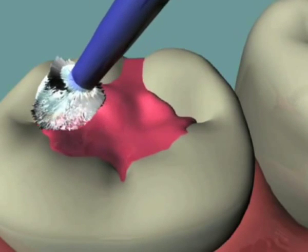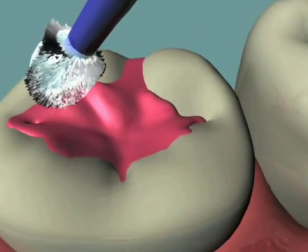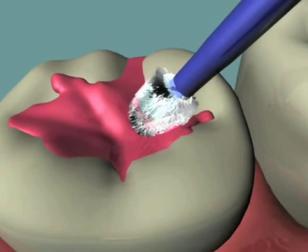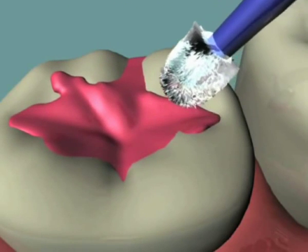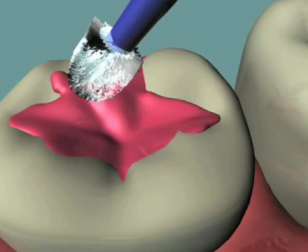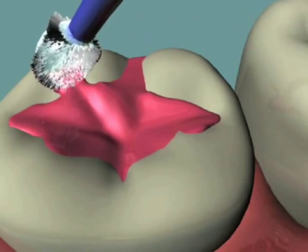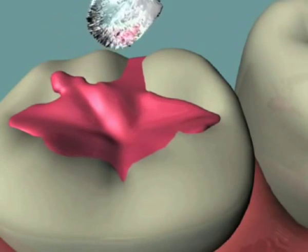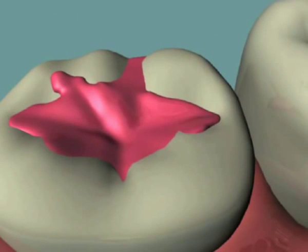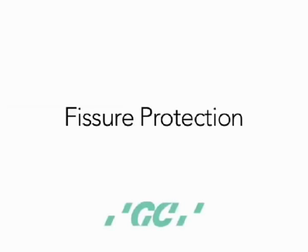Of special focus is the protection of exposed enamel surfaces on erupting first and second permanent molars. These teeth are at their highest risk of caries during the 12 to 24 month period of eruption. This procedure, often undertaken in situations where moisture control is difficult, is called fissure protection.